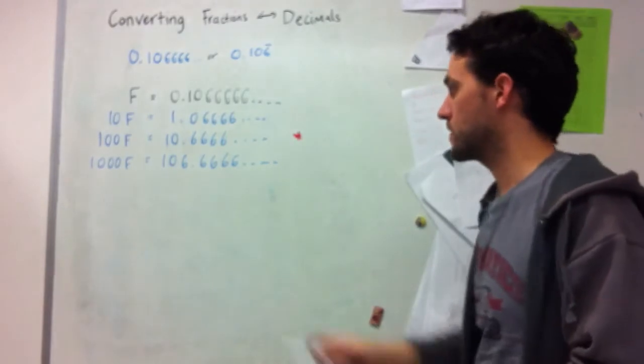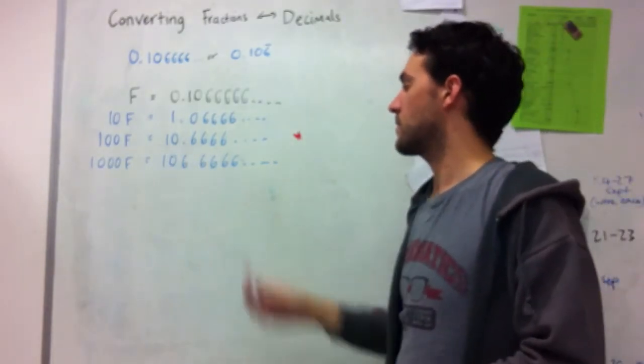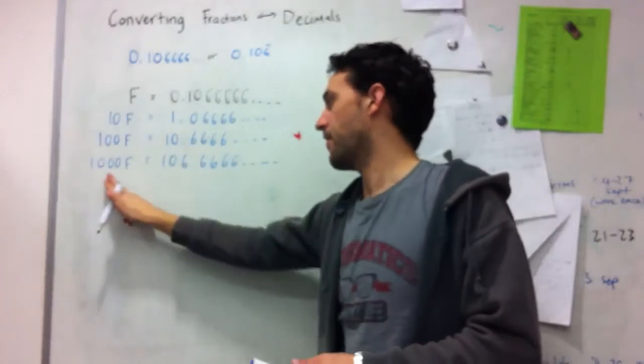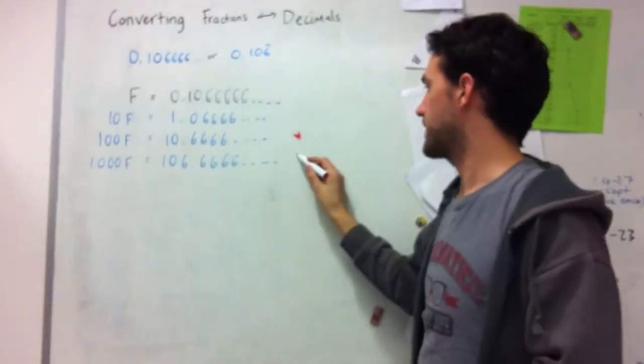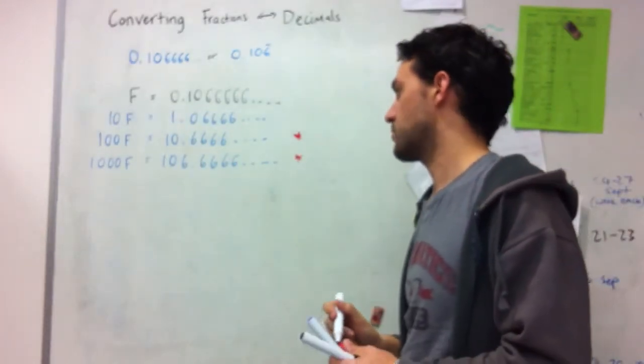100f, which is represented by the decimal 10.6 recurring, and then 1000f, which is represented by the decimal 106.6 recurring.